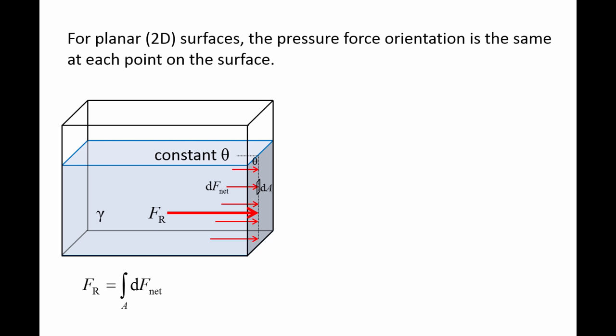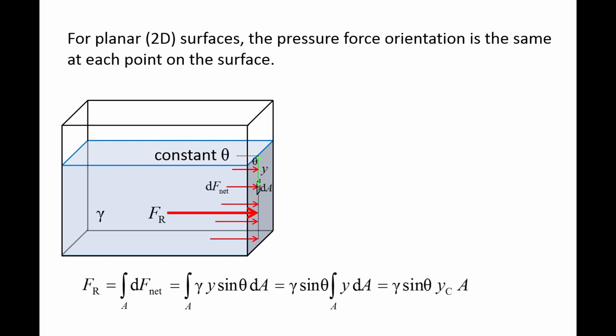The resultant force on any planar surface, Fr, is found by first determining the small net force at each small piece of area dA along the wall, then adding all these small forces through integration. The small net force at a given area dA is equal to the specific weight gamma times the distance y from the free surface to the area, times the sine of the wall orientation angle theta, times dA. We are able to pull gamma sine theta out of the integral because they are constant, and the integral of y dA is the y-coordinate of the centroid yc times the wall area.